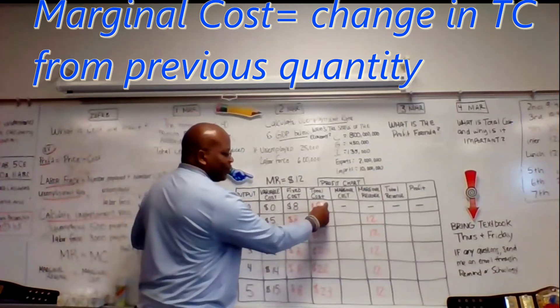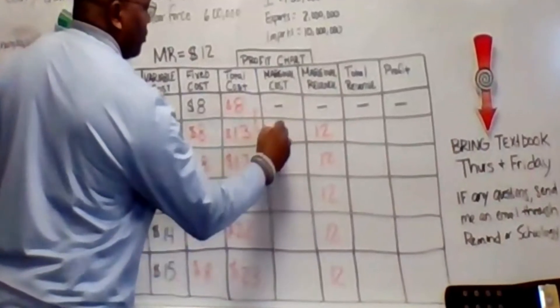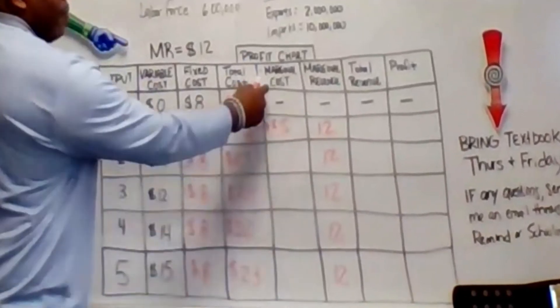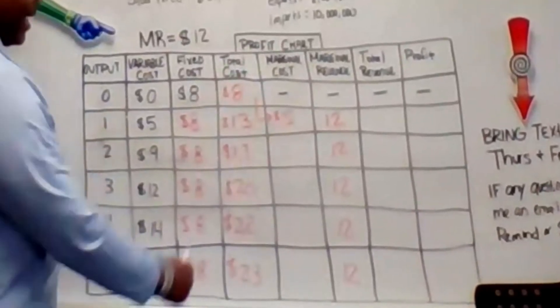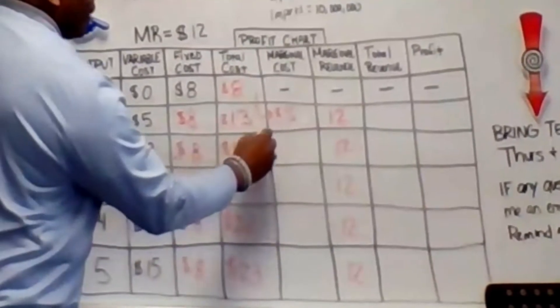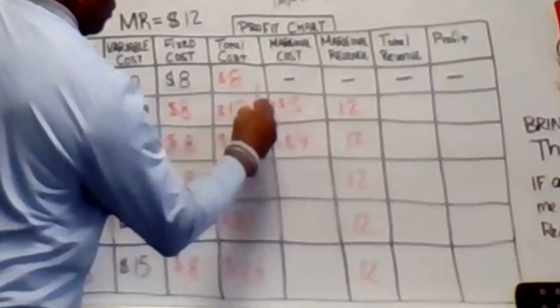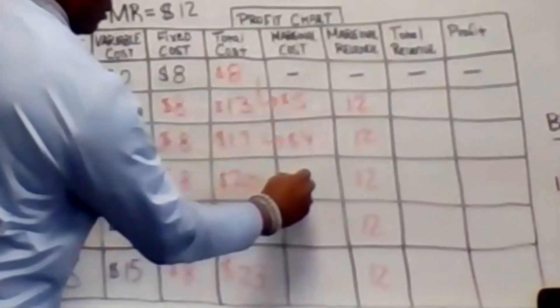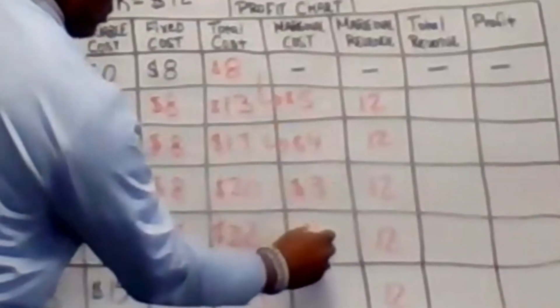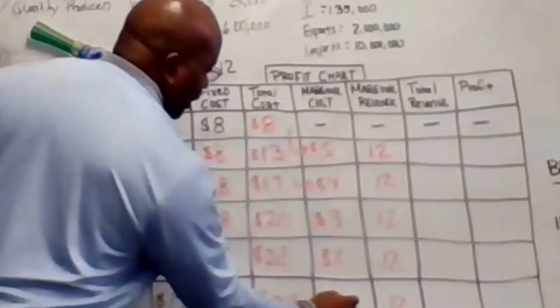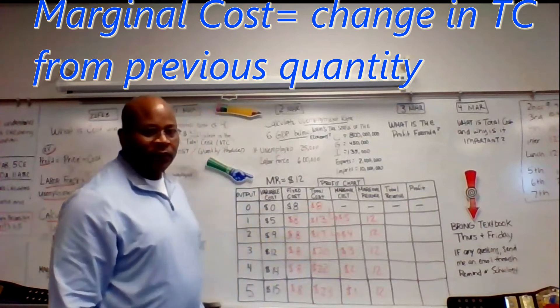Now, from zero to one, what's the difference between $8 and $13? That's $5. Again, marginal cost is the difference from the previous unit and the current unit. And just go down the line. 13 from 17, what's the difference? $4. 17 to 20, $3, 20 to 22, $2, $1. Notice how the marginal cost in this example is going down as you produce each additional unit.